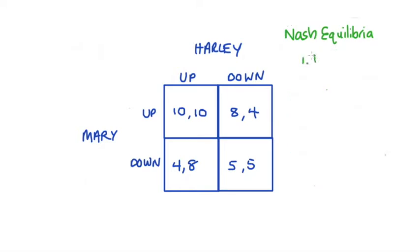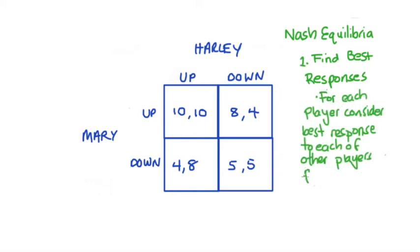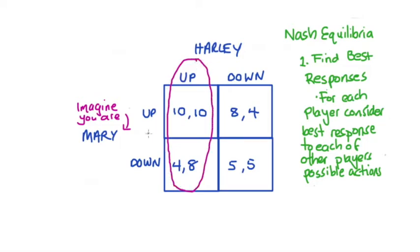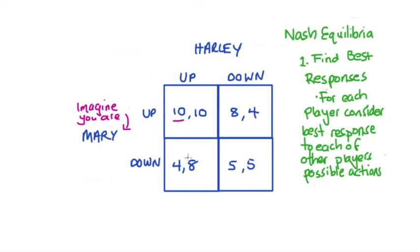The first step is to find our best responses. To find our best responses we're going to consider from the perspective of each player what the best response would be to each of the possible actions that the other player could undertake. So let's start by imagining that we're Mary. To find Mary's best responses we have to consider each of the possible actions that Harley can take and think about what Mary's best response to those actions would be. So if Harley chooses to go up we're on this column here. If Mary goes up she would get a payoff of 10; if Mary were to go down she would get a payoff of four. Since Mary would prefer the highest payoff, the best response for Mary is to go up. To indicate this we're going to underline below the payoff here, and this is a record that up is Mary's best response to Harley's going up.